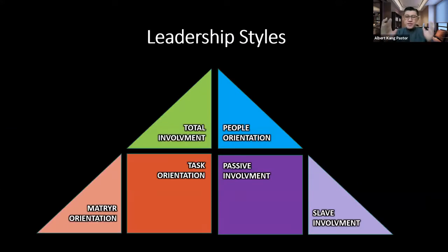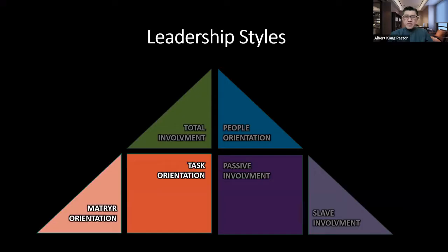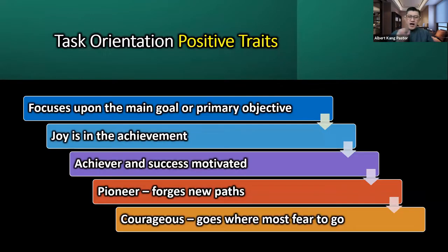We are applying the right leadership style for the right situation, but style and personality sometimes merge together and seem to be the same thing. These are the four leadership styles that we all use: total involvement, people orientation, task orientation, and passive involvement. Here you find it's a square, but here is a triangle — in the center, the four quadrants place you as the main one, then you have the two tail ends: martyr orientation and slave involvement.